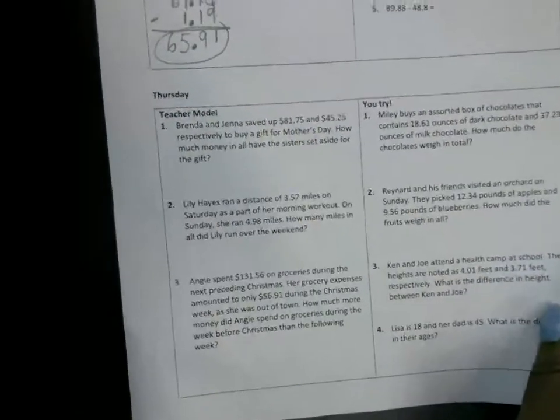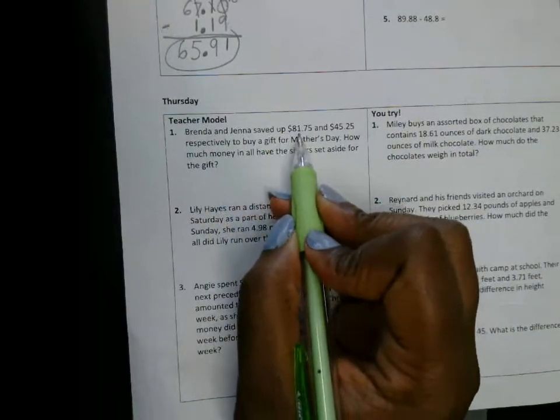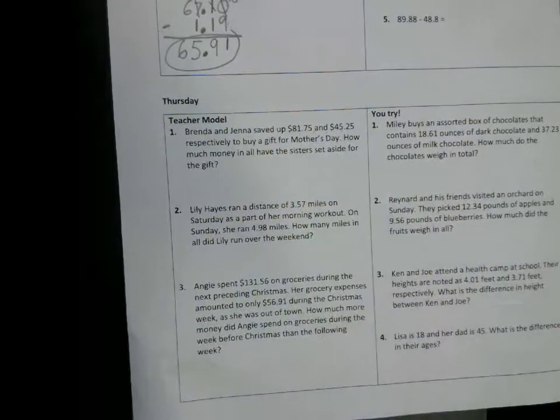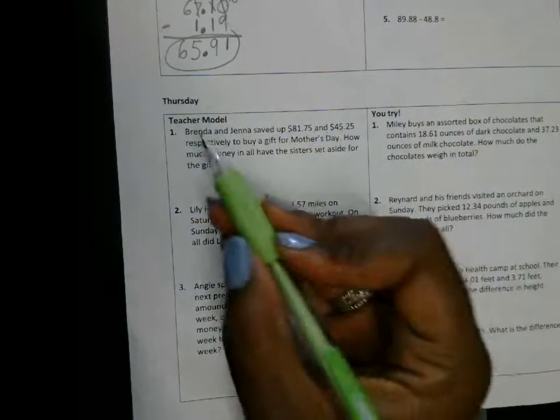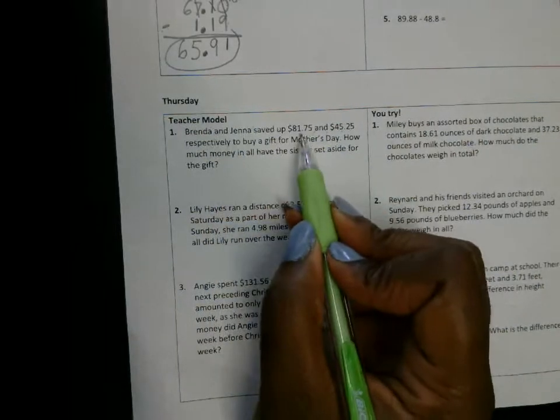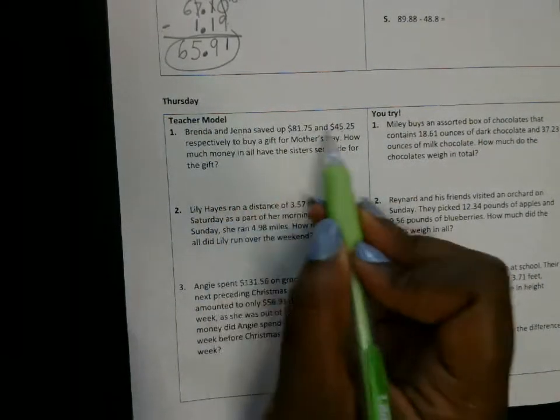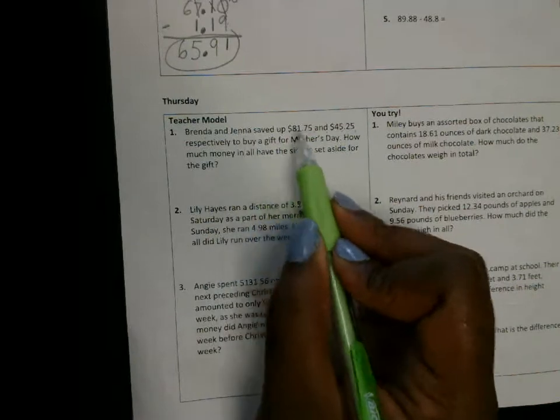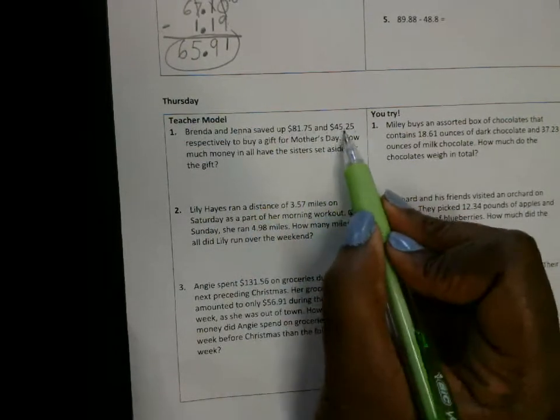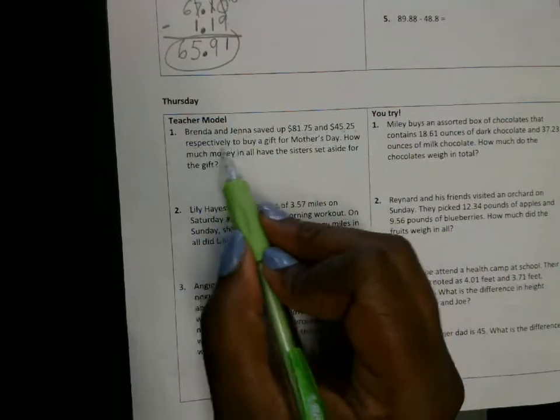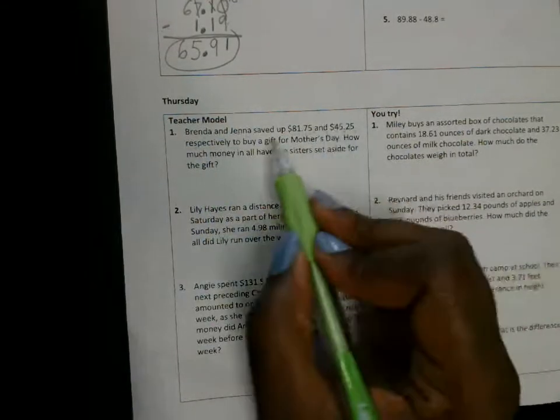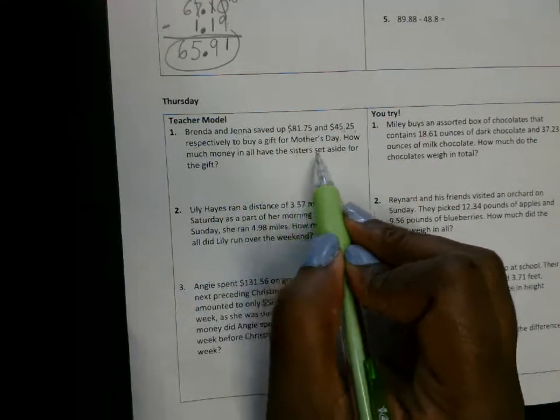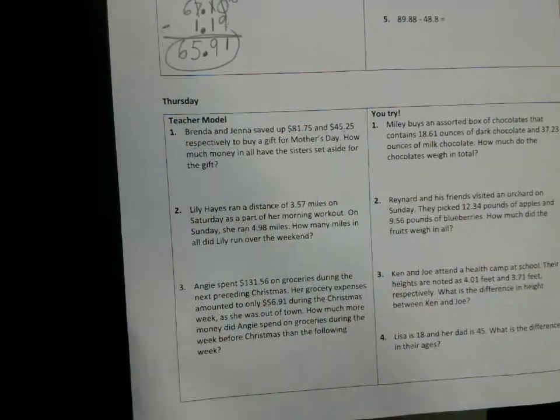OK, so it says Brenda and Jenna saved up eighty one dollars and seventy five cents and forty five dollars and twenty five cents respectfully. OK, so that means that Brenda more than likely saved this amount, Jenna more than likely saved the second amount because Brenda's name is first and Jenna's name is second. This amount is first, this amount is second. That's what this right here means. Respectively, in that order. To buy a gift for Mother's Day.